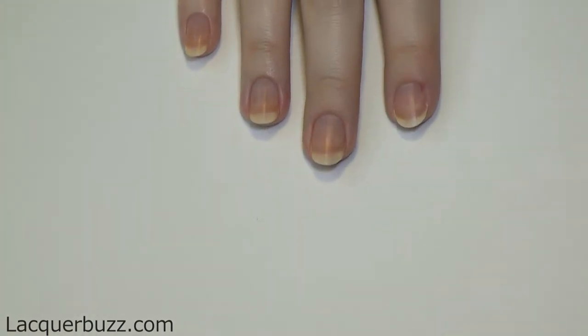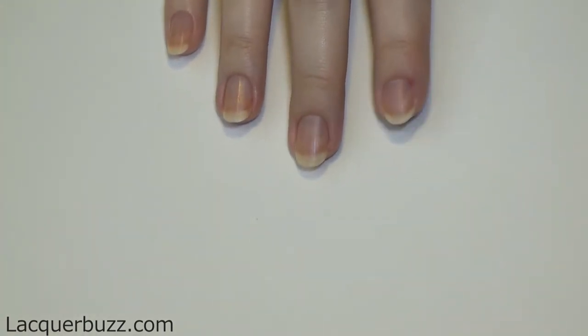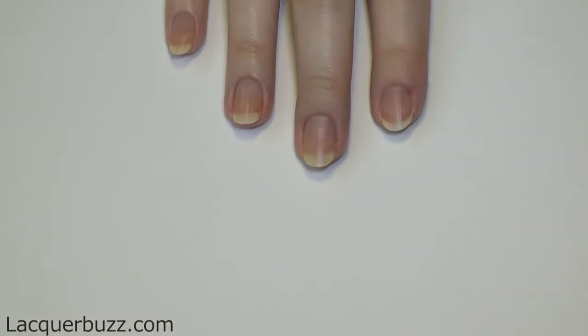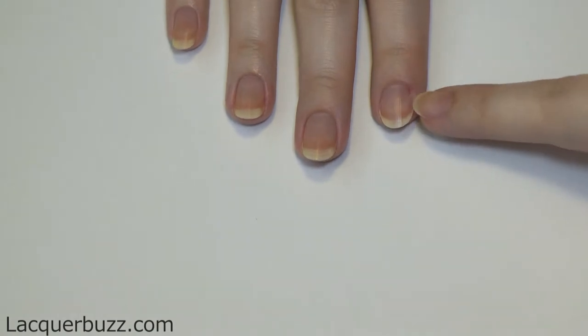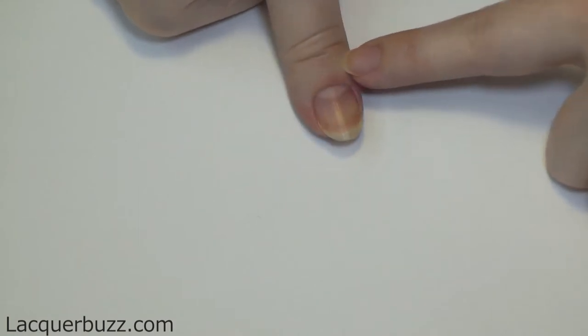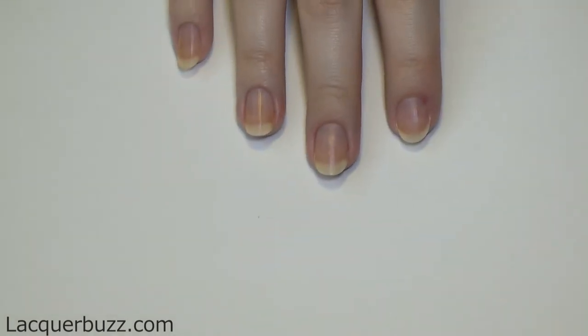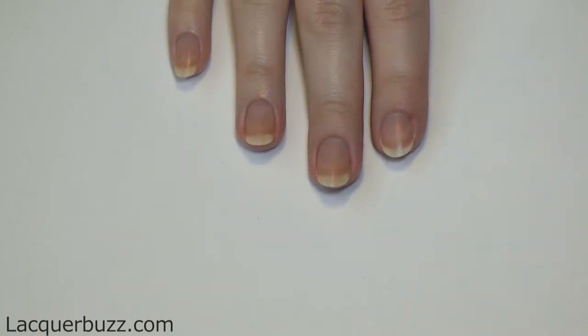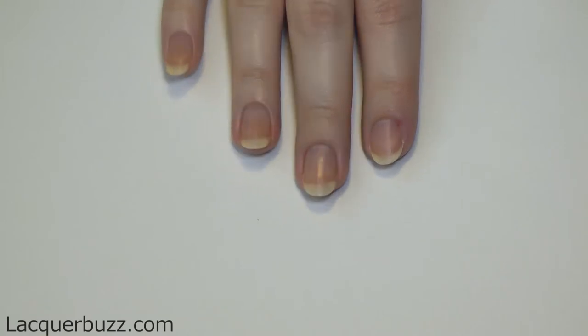My nail beds don't have the same shape. These three over here have sort of an oval shape and this one is rounded and then the thumbnail is more of a square shape. So I try to file them in an oval shape to make my fingers look longer.